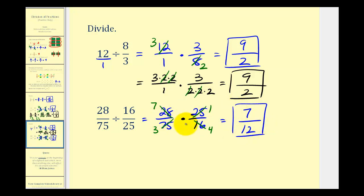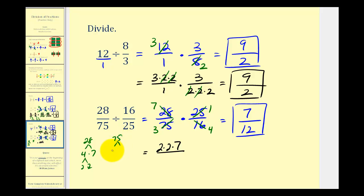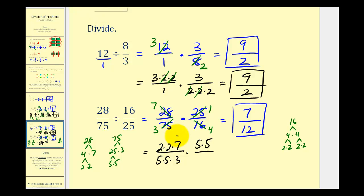When these numbers get larger, it can be more difficult to simplify directly, so let's write the prime factorization for the numerators and denominators. Twenty-eight is two times two times seven. Seventy-five is five times five times three. Twenty-five is five times five. Sixteen is two times two times two times two. Now we can see all the common factors: five over five, five over five, two over two, two over two. The numerator is seven, and the denominator is three times two times two, which is twelve — giving us seven-twelfths.